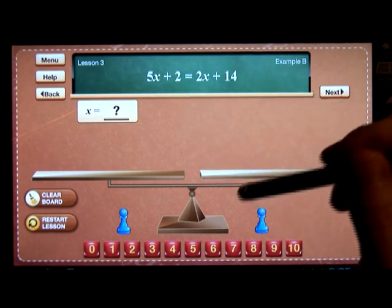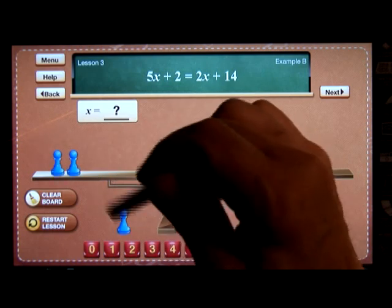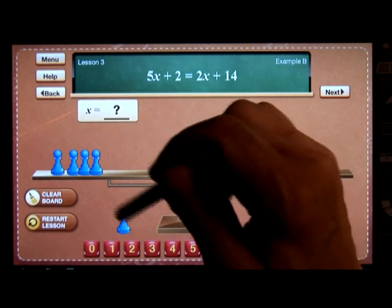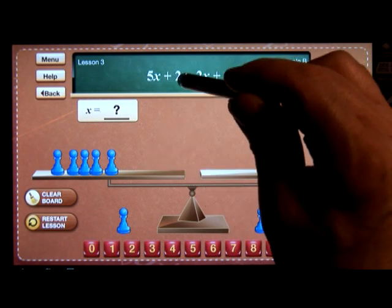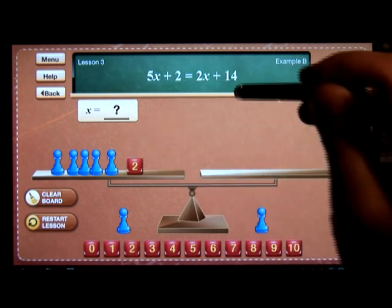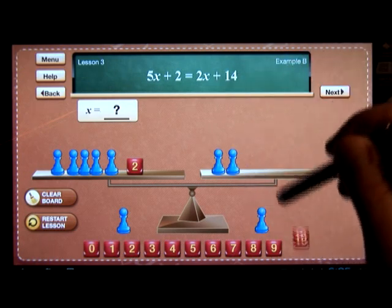The x will be represented by the blue pawn. Where it says five x's, I will place five blue pawns on this side of the scale. The plus means I need to add something else to the scale. It says two, I'll place the cube with the number two on the right side. I'll have two x's plus 14.